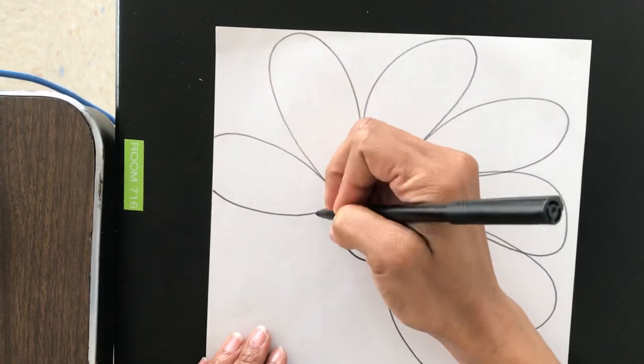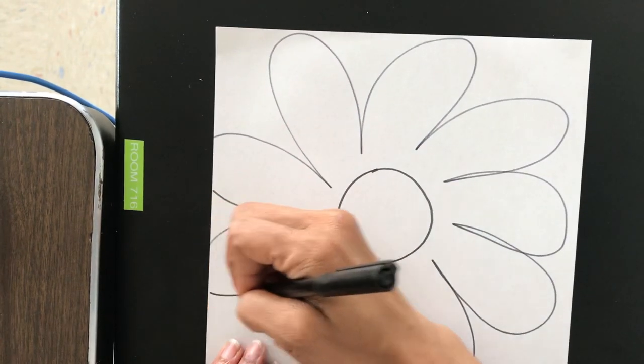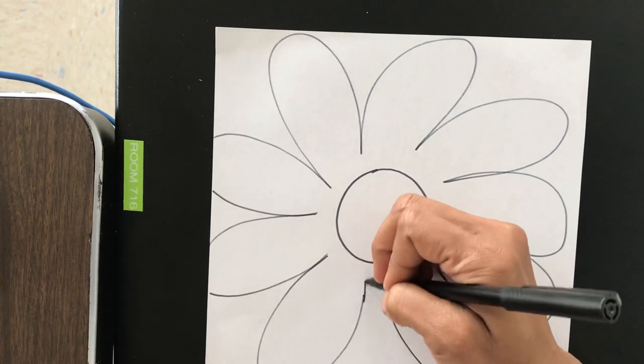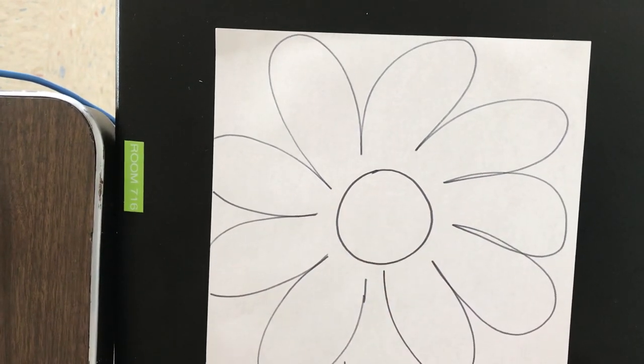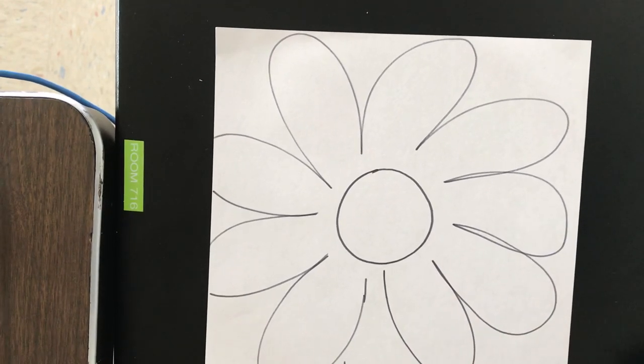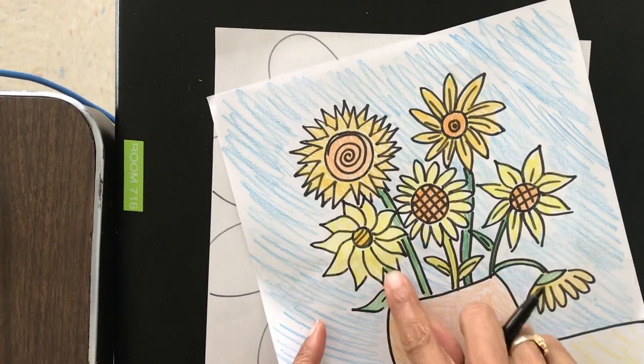And it's okay if it goes off of the page, guys. That makes it interesting. And then I'm going to draw the stem of my flower, the stem of my sunflower. Everybody see that?